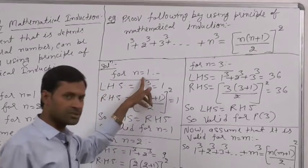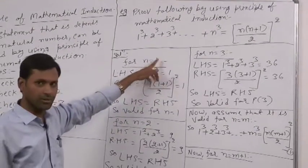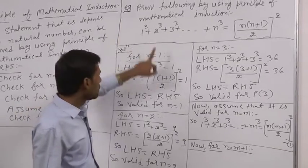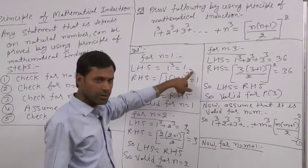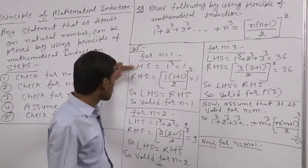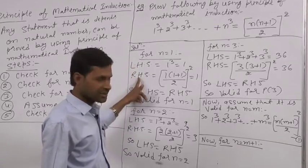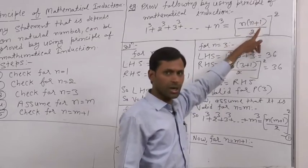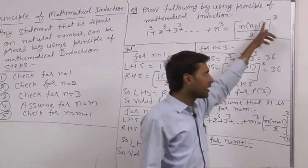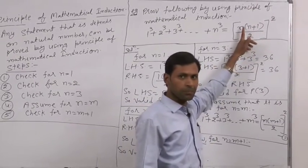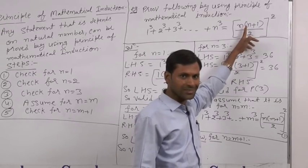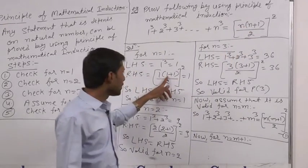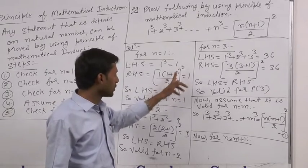For step 1, for natural number 1: LHS is 1 cube, which is equal to 1. Then for RHS, RHS is n(n+1)/2 whole square. Here n value is 1, so we replace n equal to 1 in this expression. Then 1 times (1+1)/2 whole square is equal to 1.